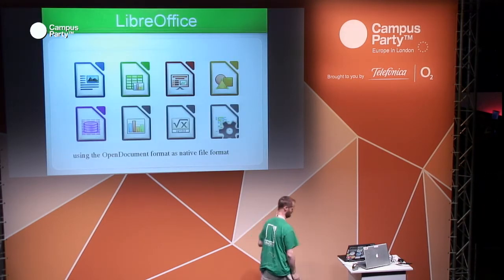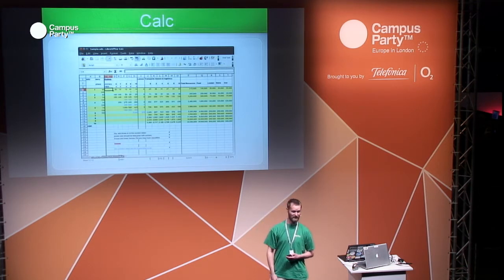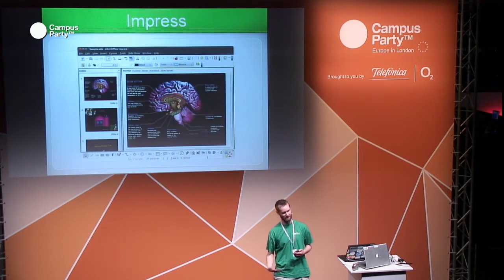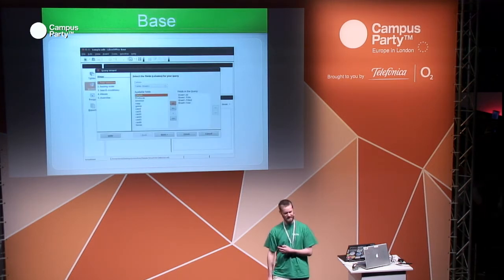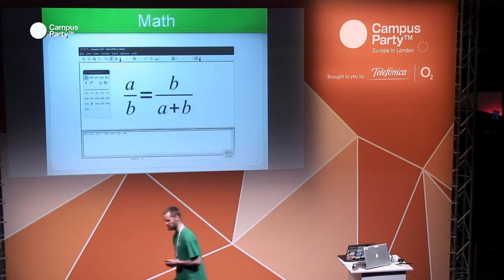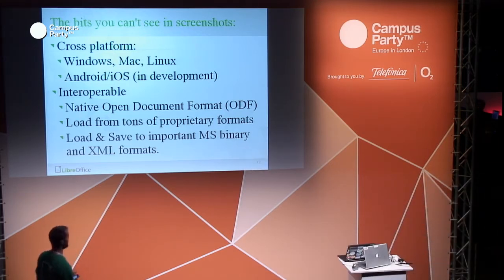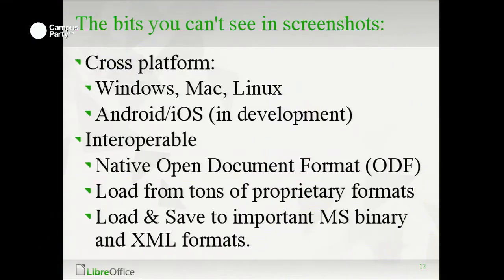It's a free office suite. We have a word processor, a spreadsheet called Calc, graphs, presentations, drawing tools, a database similar to Access, and formula editing. We're cross-platform — Windows, Mac, and Linux — with Android and iOS versions in development. We load and save documents in Microsoft formats so you can exchange them with friends, as well as many other proprietary formats.